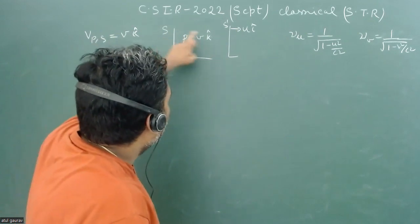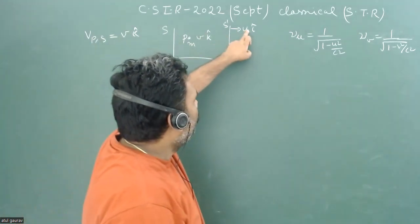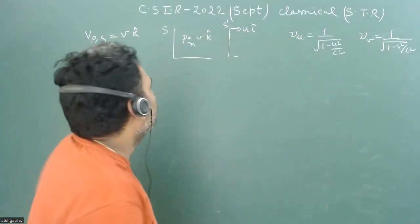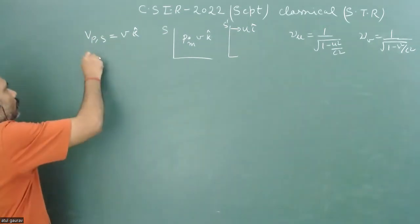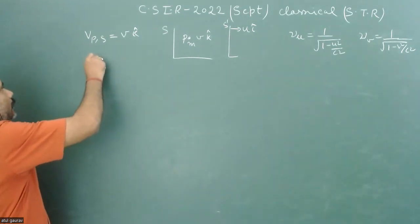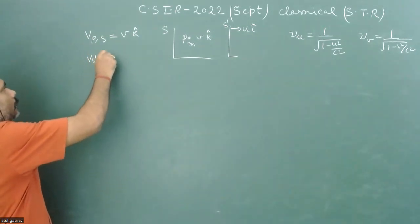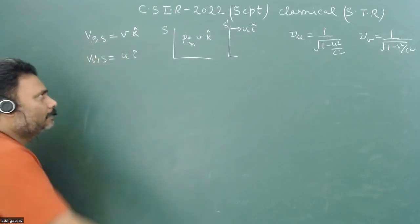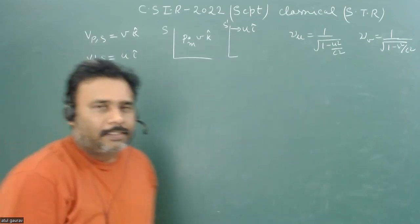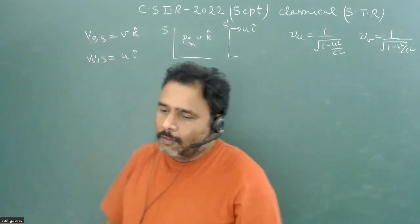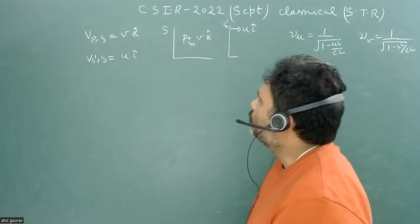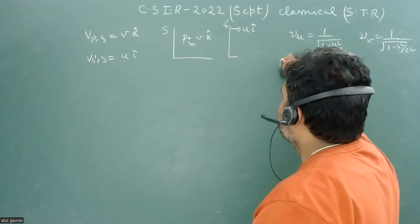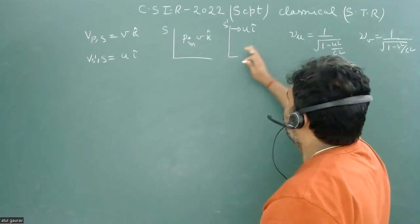Another frame S-dash is moving with respect to S with speed u in the i-cap direction. So velocity of S-dash with respect to S is u in the i-cap direction. What we have to do is calculate the energy of the particle with respect to S-dash.